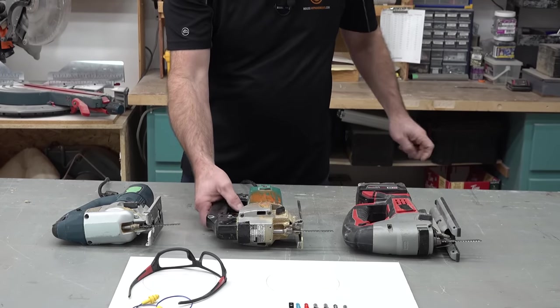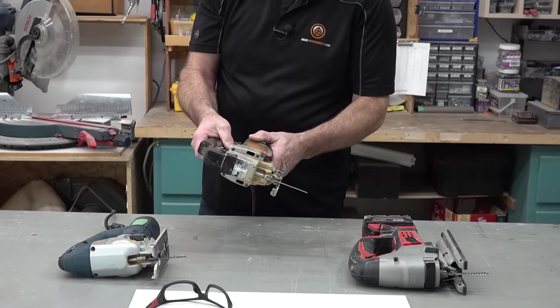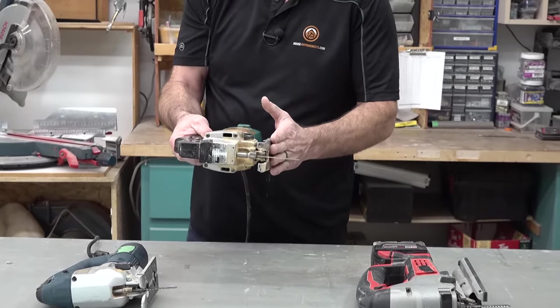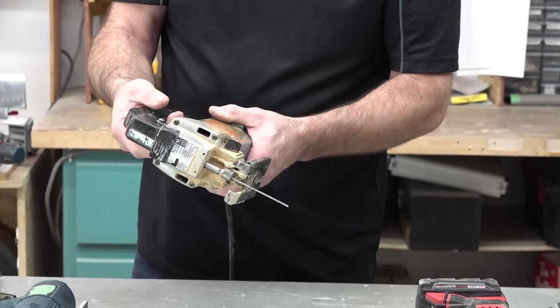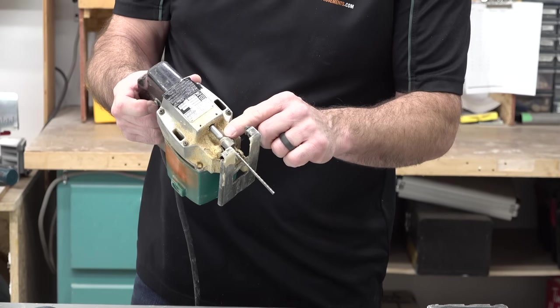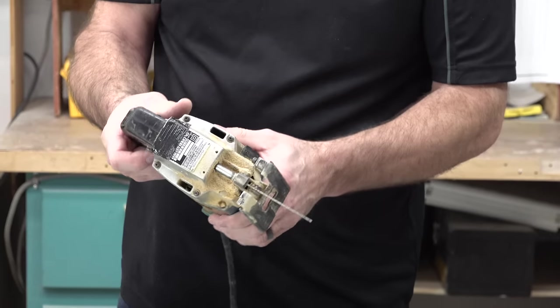So your basic jigsaw, all of them are going to have an adjustable shoe, which is this piece here. They're all going to have a trigger obviously, and they're all going to have a shaft here for the blade to install into.